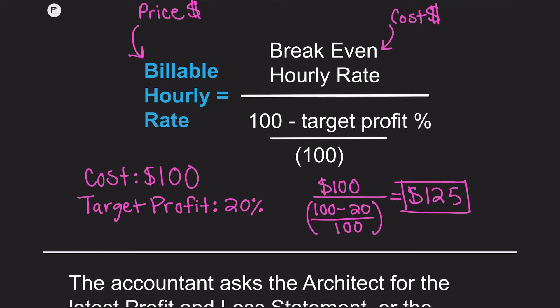Here's a formula you'll want to know for the ARE 5.0 practice management exam. Knowing how to embed a target profit margin into the billable hourly rate is key to pricing your fees. The formula is: Billable Hourly Rate = Cost to provide the service ÷ (100 − target profit percentage). What this means is the architect must charge $125 an hour to generate a 20% profit margin. The architect can maintain the 20% in the denominator, and if their costs increase, the final billable hourly rate will still provide an embedded profit margin of 20% or any other target margin needed.